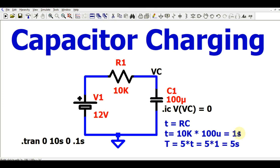Since you already know that a capacitor takes 5 time constants to charge fully, the total charge time is 5T, which here equals 5 seconds.